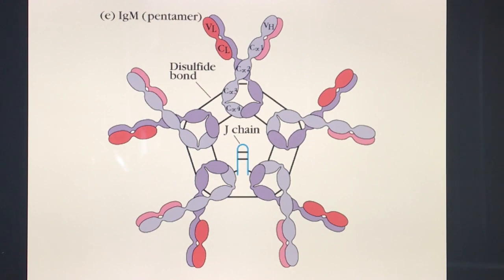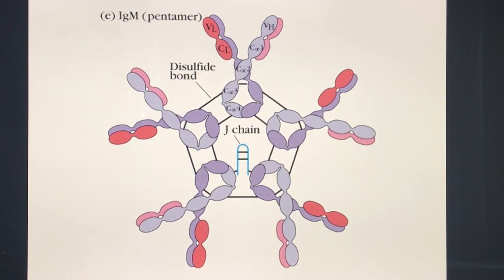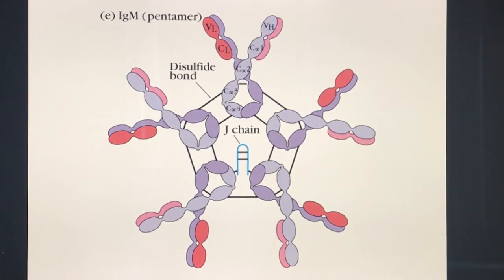This illustration from Harper's shows the structure of IgM, which is a pentamer. This is one immunoglobulin fraction, and you'll notice there are five of them — hence the term pentamer. IgM is the only immunoglobulin which exists in a pentameric state. Since it is a pentamer, it is the largest immunoglobulin, and the clinical correlate is that it is too large to cross the placental barrier.